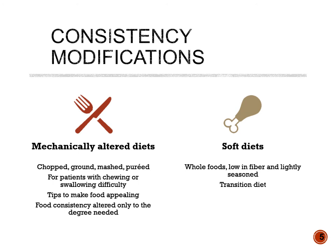Then we move on to mechanically altered diets. These diets could include any consistency in terms of modifying — chopped, ground, mashed, or pureed consistencies. Mechanically altered diets are for patients who have difficulty chewing or swallowing. They are a step up from the full liquid diet and can be given in the interim before a soft or general diet can be tolerated. Soft diets are whole foods but tend to be low in fiber and low in seasoning. This is the next step up from mechanically altered diets and is considered a transition diet.